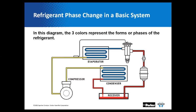In this picture we have our basic refrigeration system with its four main components: the compressor, our condenser, our metering device — in this example a TXV mechanical expansion valve — and our evaporator. We're going to talk about the different phases of refrigerant. Going back to high school chemistry, we have three main phases: solid, liquid, and gas or vapor. In a refrigeration system we primarily deal with liquid and vapor, and also a mixture of the two inside our coils — known as a saturated mixture where both liquid and vapor are present.